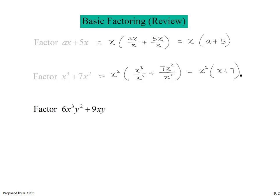Let's take a look at another one. Again, I have two terms. Do we have any common factors? Let's look one by one. The numbers first: 6 and 9 — what do they have in common? 3. Then x cubed and x — what do they have in common? x. Then y squared and y — what do they have in common? y. So 3xy will be the GCF, and I am going to factor out 3xy.